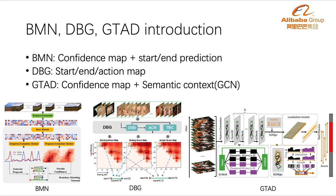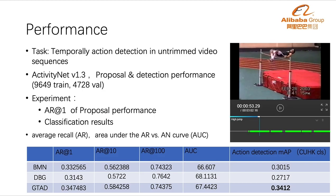BMN integrates the 2D confidence map and start-end score prediction. DBG produces three score maps: start, end, and action-completeness score maps simultaneously. DBG utilizes a temporal and semantic graph neural network to improve the capacity of proposal generation. We found the metric AUC for proposal evaluation cannot represent the performance of action detection well, as the average action per video is 1.5 and the most related metric is AR1. From the table, GTAD achieves much better performance than other methods, therefore we use GTAD as our main model for proposal generation.